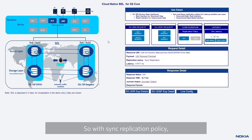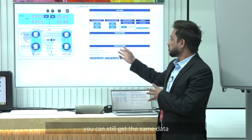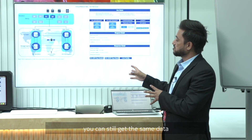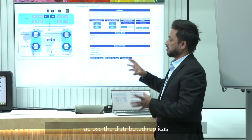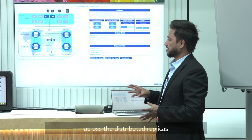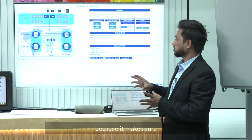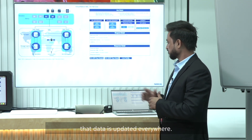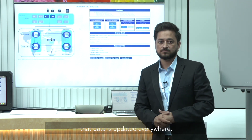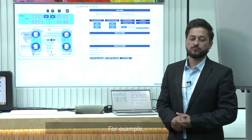With sync replication policy, even if a subsequent request comes to the Bangalore site, you can still get the same data across the distributed replicas, because it makes sure that data is updated everywhere. For example, HSS traffic involves a sequence of operations where a later operation relies on the results of earlier operations.